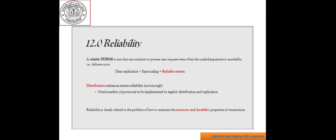A reliable DBMS is one that continues to process user requests even when the underlying system is unreliable, that is, when failure occurs. Data replication plus easy scaling is characteristic of a reliable system. Distribution enhances system reliability but needs a number of protocols to be implemented to exploit distribution. Application reliability is closely related to the problem of how to maintain the atomicity and durability properties of transactions.